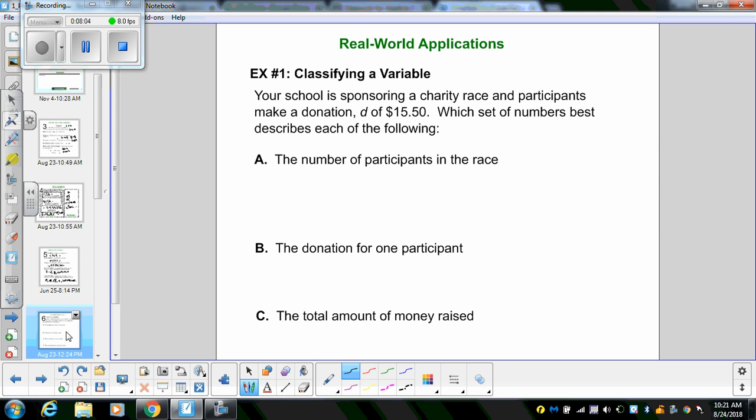So look at example one here. Real world application. Example one is classifying a variable. Your school is sponsoring a charity race, and participants make a donation of D, $15.50. Which set of numbers best describe each of the following? The number of participants in the race. Well, can you have zero people enter the race? Hopefully, you said yes. So it's possible that no one enters. So therefore, you want to think natural numbers, but because you can actually have the value of zero included, you should actually think whole numbers.